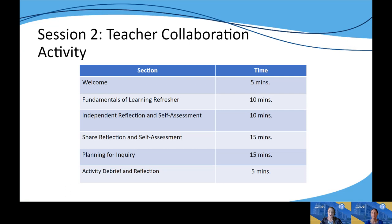In the independent reflection and self-assessment section, participants apply their learning about the necessary conditions for formative assessment — particularly student ownership and classroom culture — by reflecting on their own classrooms using a tool to rate where they feel they are in regards to the fundamentals of learning. The share reflection and self-assessment section fosters personal reflection and group discussion, allowing teachers to use results from the reflection tool to spark reflective conversations with colleagues. Finally, the planning for inquiry section serves as the first step in an inquiry process focused on trying something new and learning about its impact in developing classroom culture that supports formative assessment.